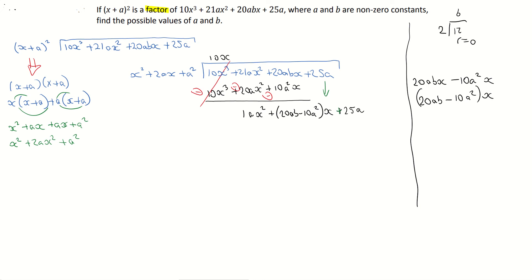I'm going to divide again. x squared divides into ax squared a times, so I'm going to put plus a up here — x squared divides into ax squared once. I'm going to multiply that down. a by x squared is ax squared. a multiplied by 2ax is positive 2a squared x. And a multiplied by a squared is a positive a cubed. Now I'll change my signs: minus, minus, minus. Cancel out: ax squared minus ax squared is 0.